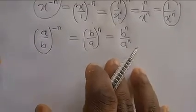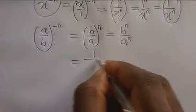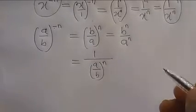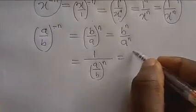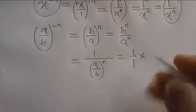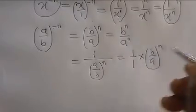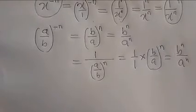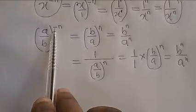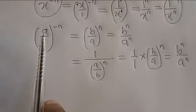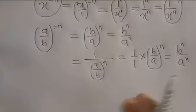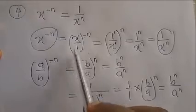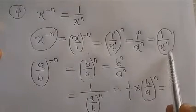Some people may write it as 1 over (a/b)^n and work through it: that becomes 1 divided by a^n/b^n, which equals b^n/a^n — the same result. But the reciprocal method is faster. Whenever you have a negative power, just turn whatever is in the bracket upside down, remove the negative, and you're done.